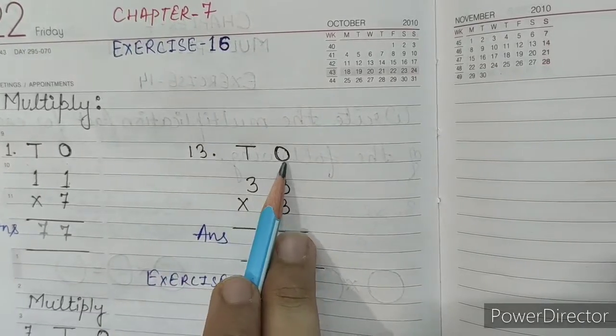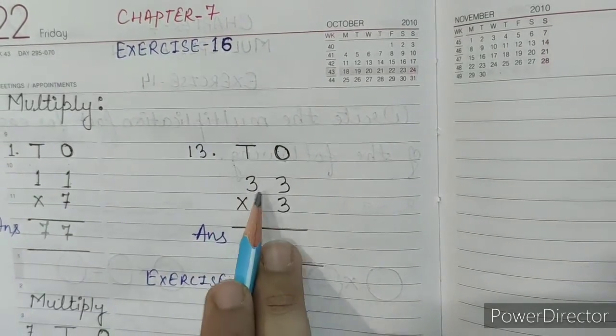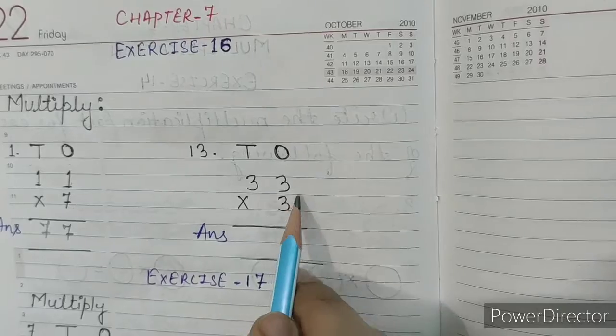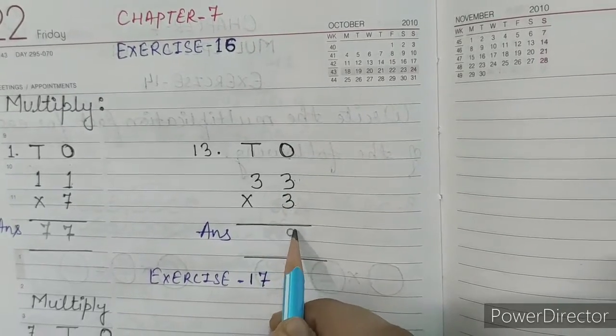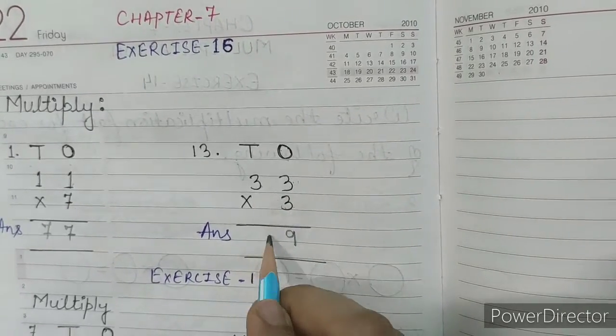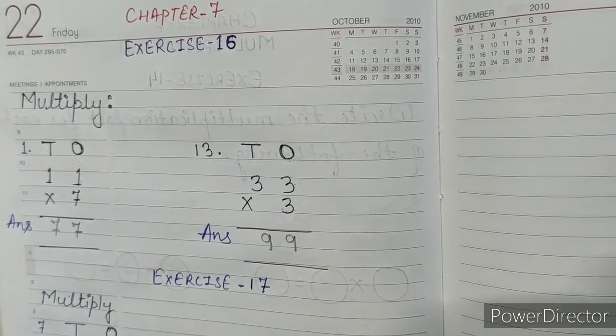Question number 13, ones, tens. So, 33 into 3. 3 into 3, 3s are 9 and then 3, 3s are 9. So, our answer is 99.